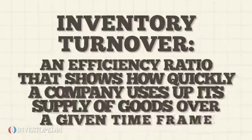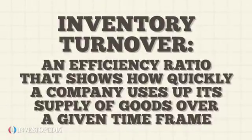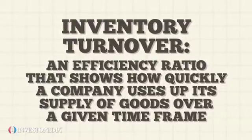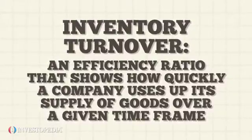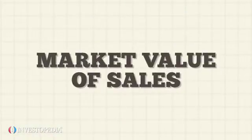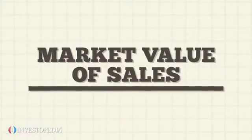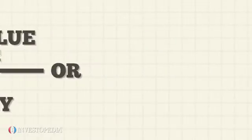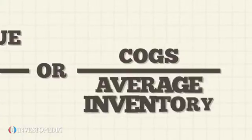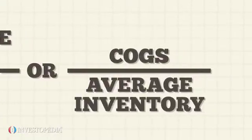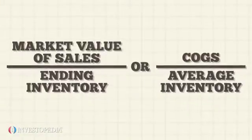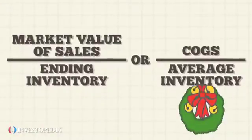Inventory turnover is an efficiency ratio that shows how quickly a company uses up its supply of goods over a given time frame. It may be calculated as the market value of sales divided by ending inventory, or as cost of goods sold (COGS) divided by average inventory. Average inventory can be a more accurate input than ending inventory in that it accounts for seasonal fluctuations.